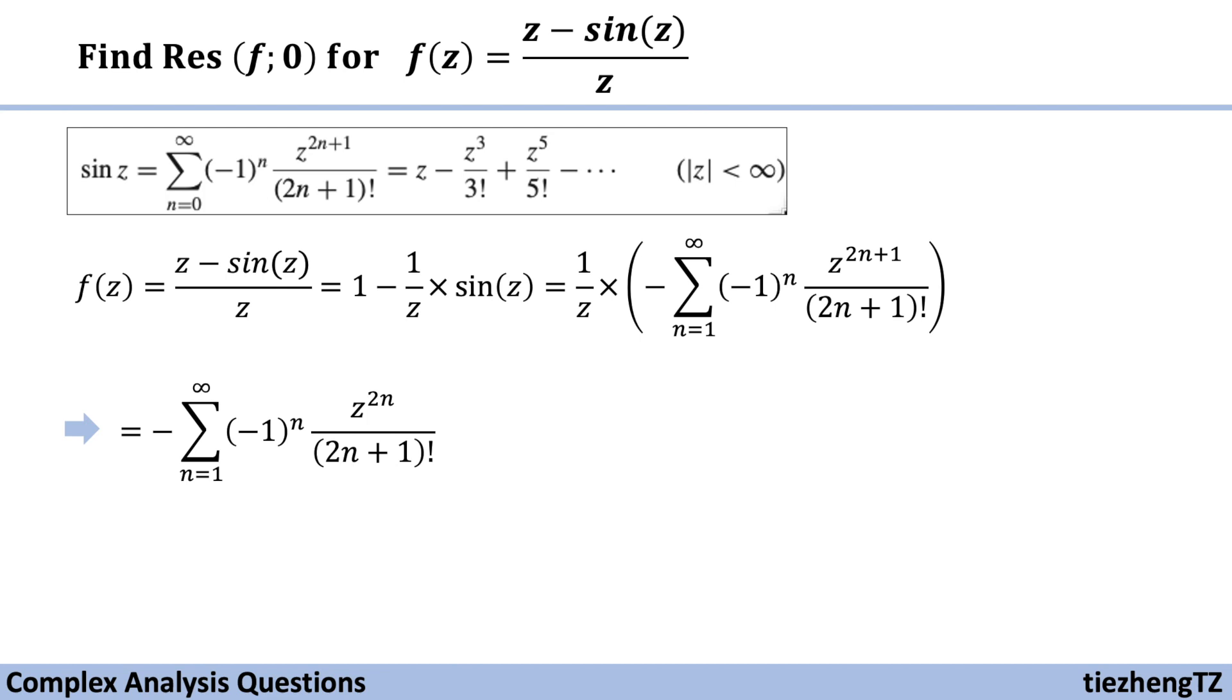Okay, so next, we need to find the coefficient of 1 over z minus z0. And in this case, z0 is 0, which means we need to look for the coefficient of 1 over z.